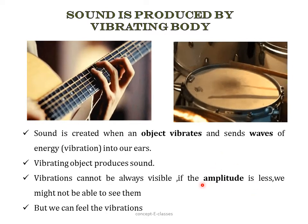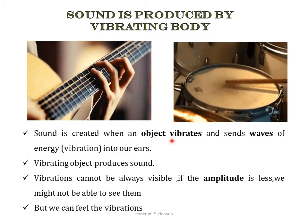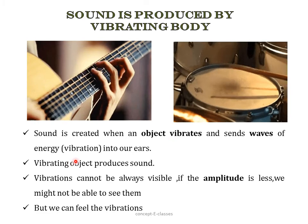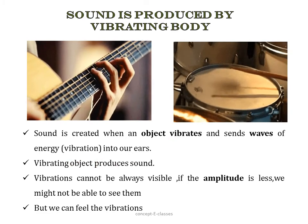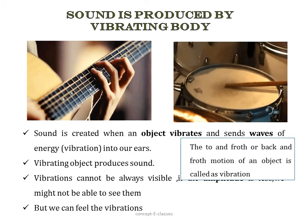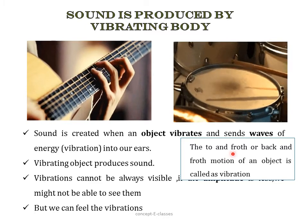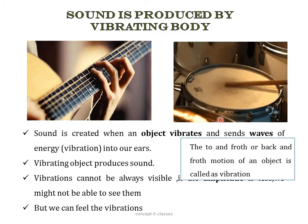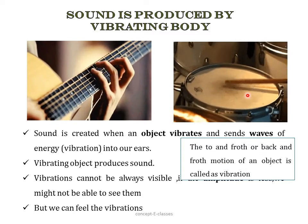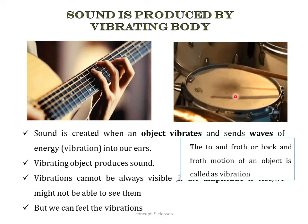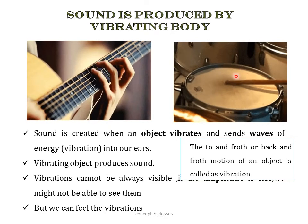We simply have to understand that sound is created when an object vibrates, or we can say vibrating objects produce sound. The to-and-fro or back-and-forth motion of an object is called vibration. For example, when we hit a drum, we can notice there is a to-and-fro motion. This motion of an object is termed as vibration.